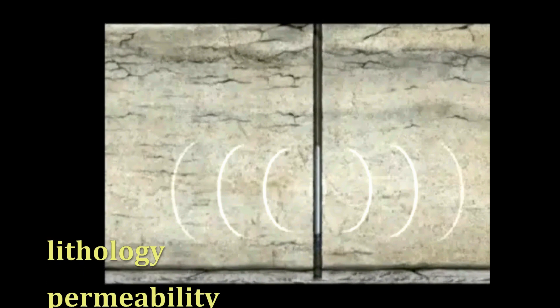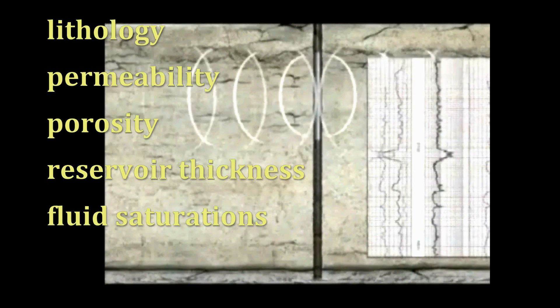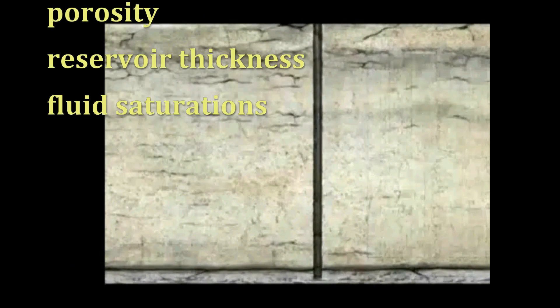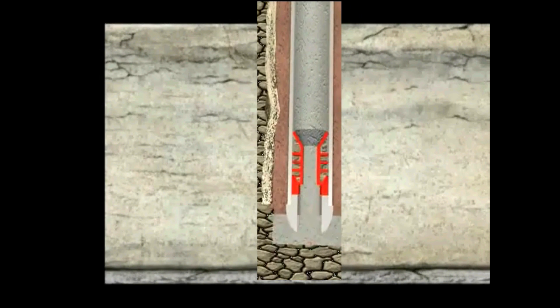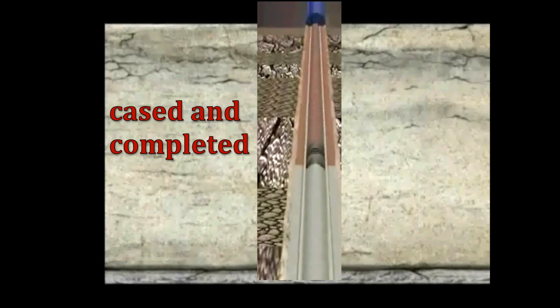If you remember from Chapter 7, it is in open hole that open hole well logs that identify lithology, measure permeability, porosity, the reservoir thickness, and fluid saturation levels are finalized. Once a potentially commercial viable well is confirmed, this section of the hole is then cased or completed.